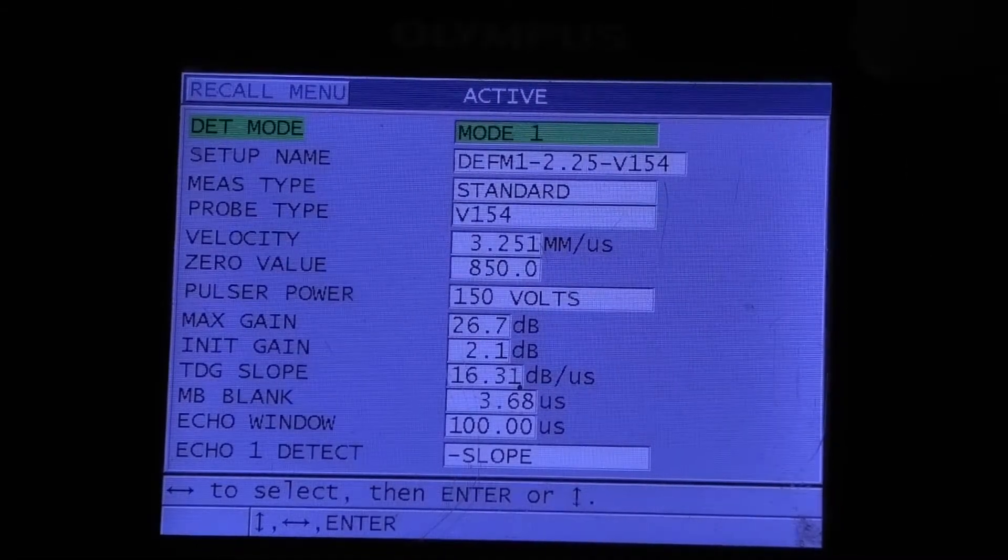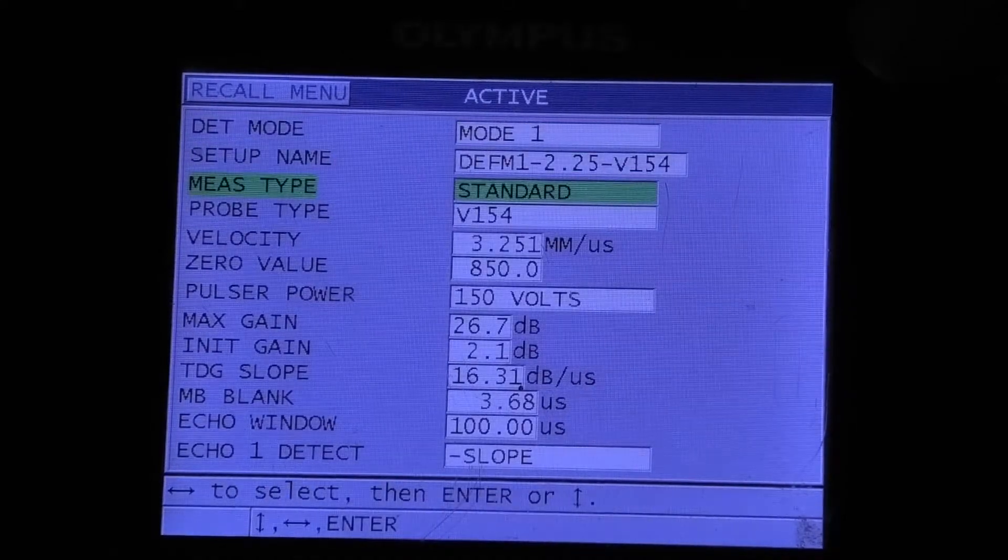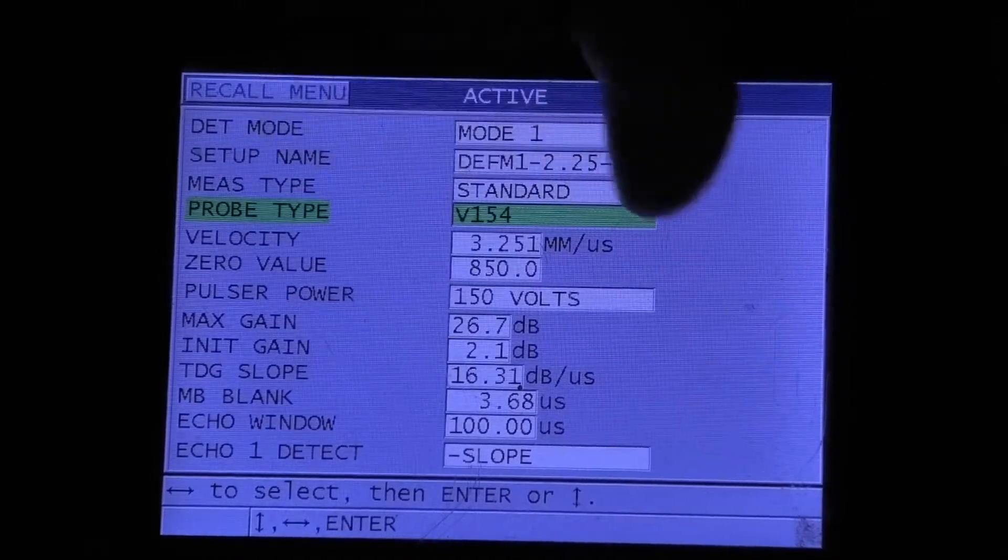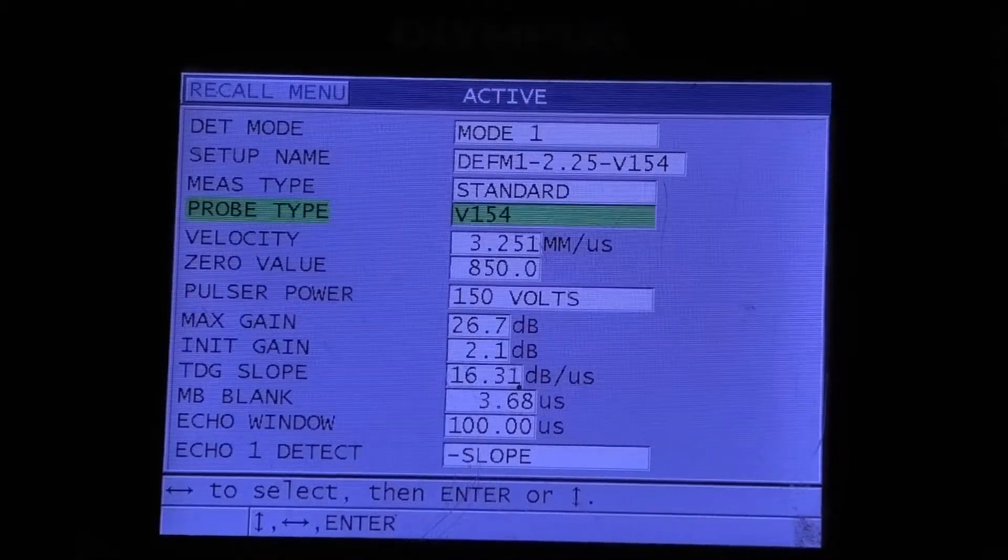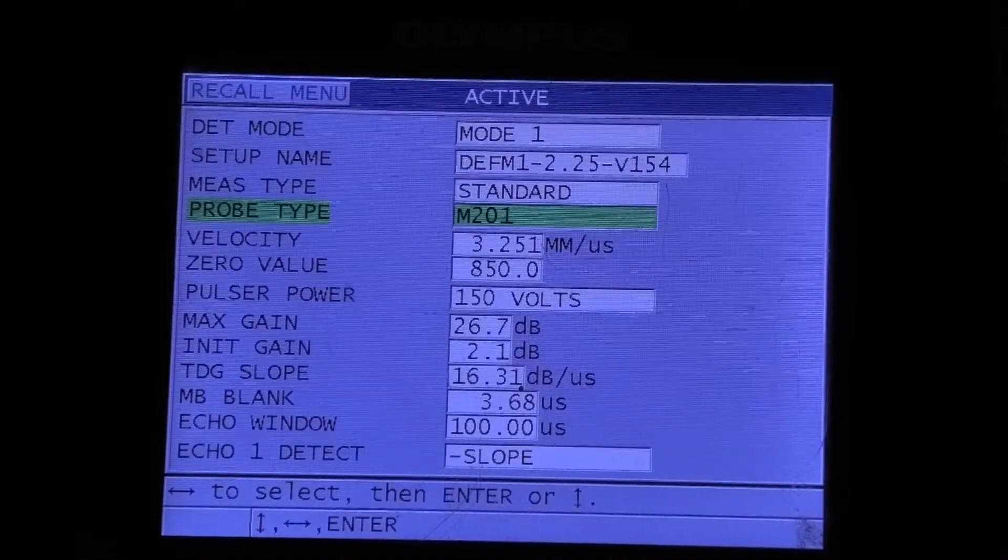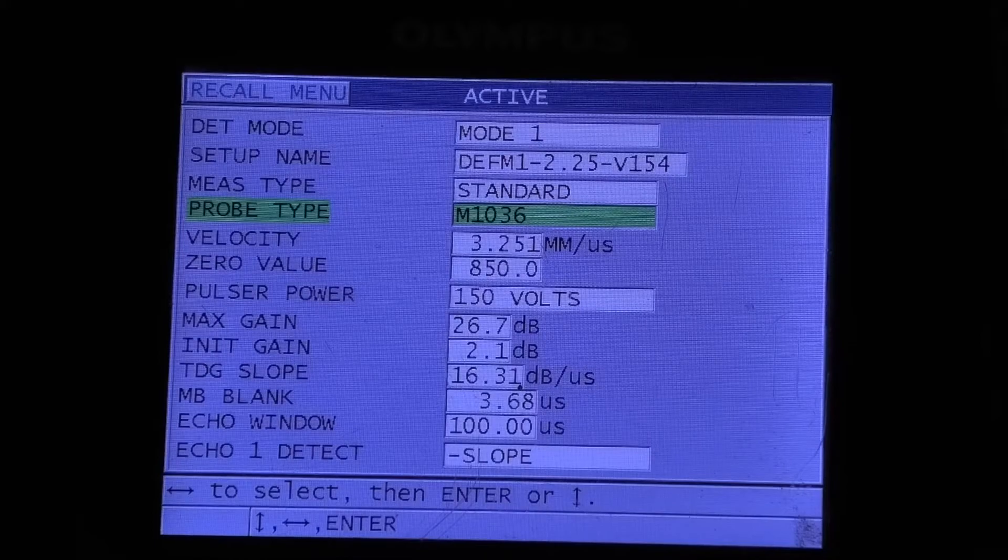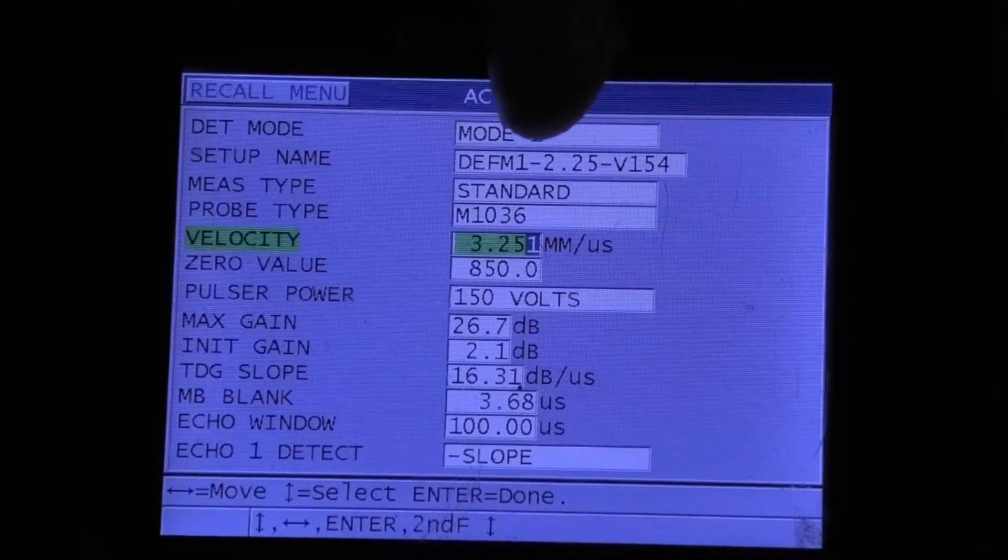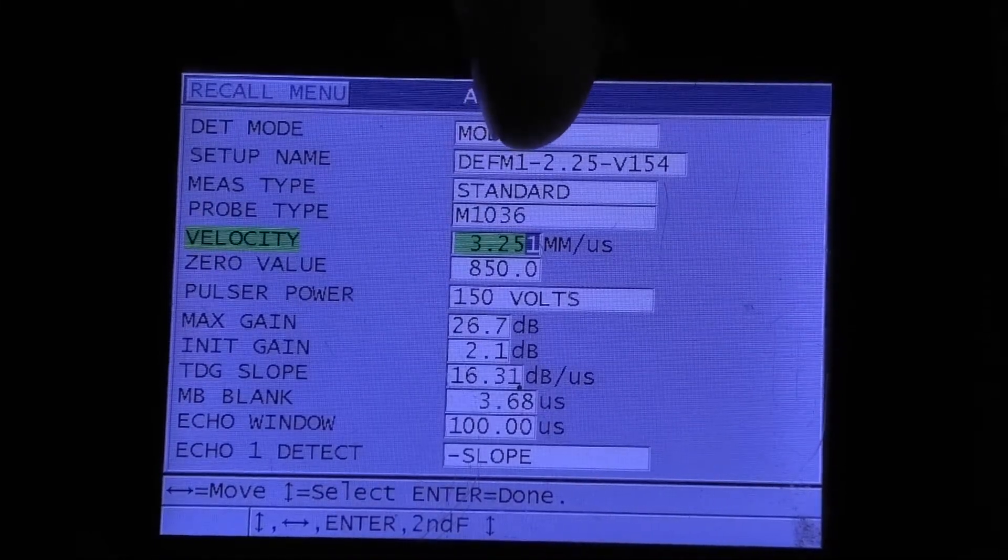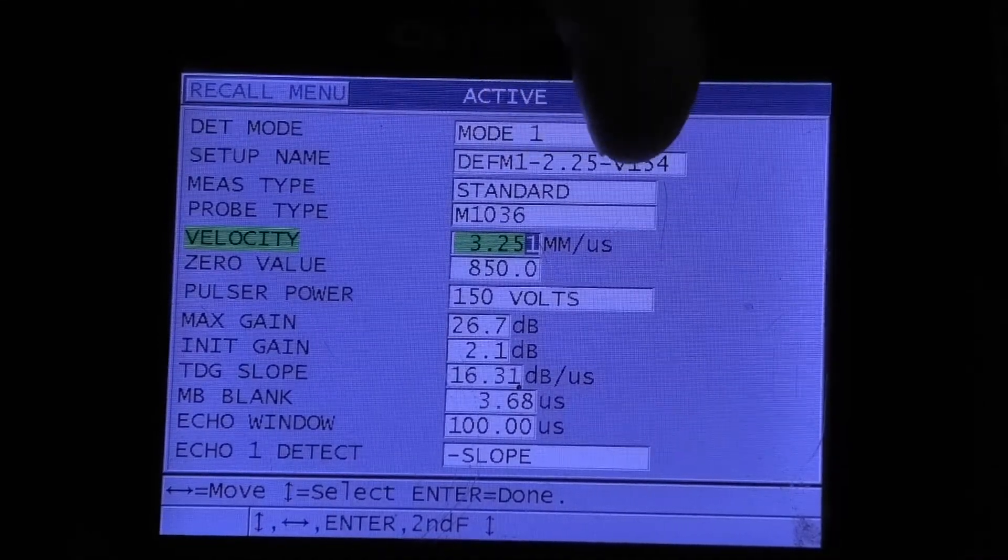Mode 1 is correct. Now if we push the enter key multiple times, I'm on the probe type. Now it says V154. We've got a different element here. So I just push the left arrow and there's the M1036 which is the one. Now I push enter here. Now this is critical.